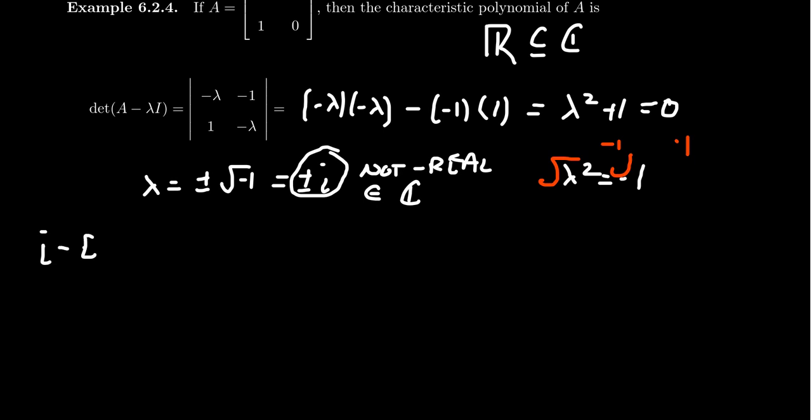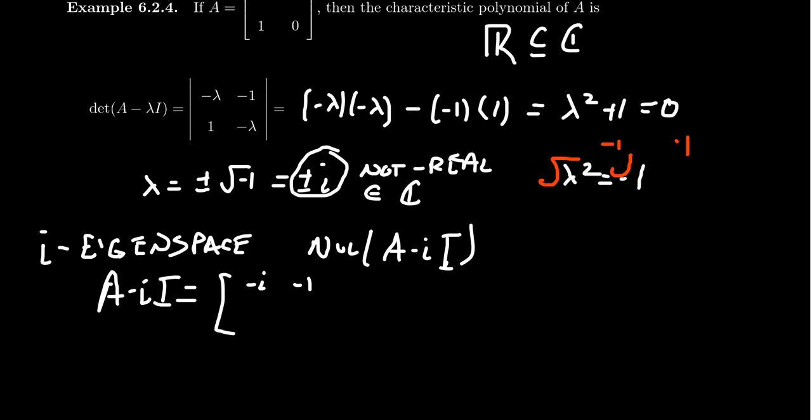So if we had these imaginary eigenvalues, what does that say about the matrix? We could start finding eigenspaces. Could we find the i eigenspace? The answer is yes. We want to look at the null space of the matrix A - iI. Horrible pun there with little i and the identity matrix. Let's look at that for a second. If we take the matrix A - iI, this looks like our original matrix: 0 - i, we get -i; -1, 1, and -i.